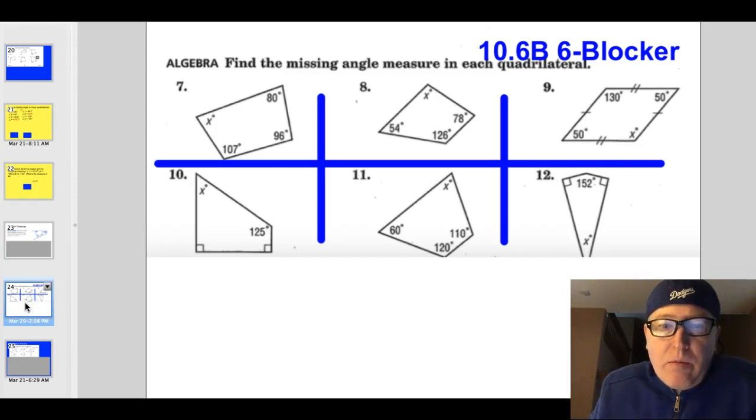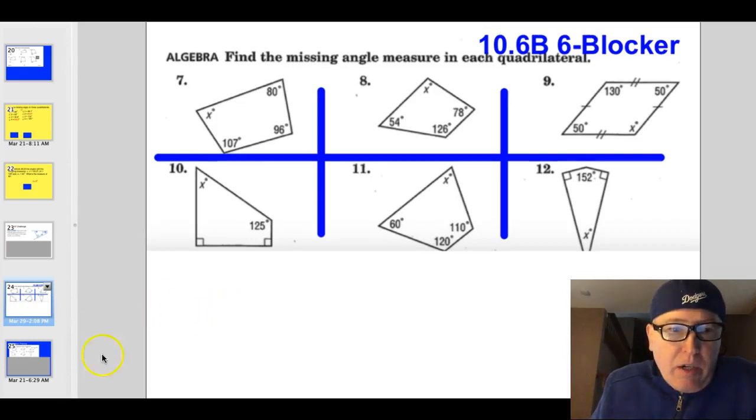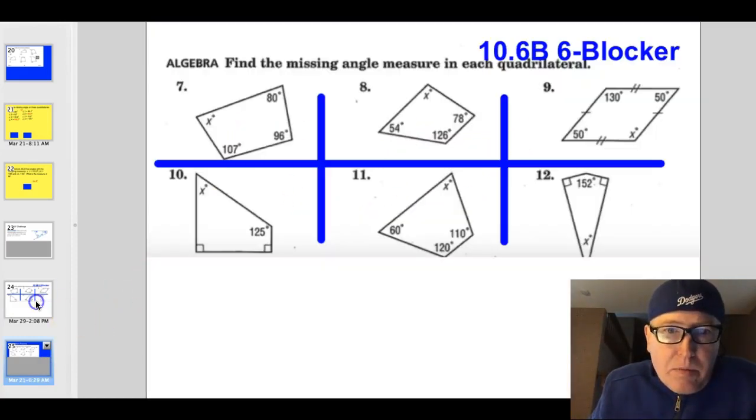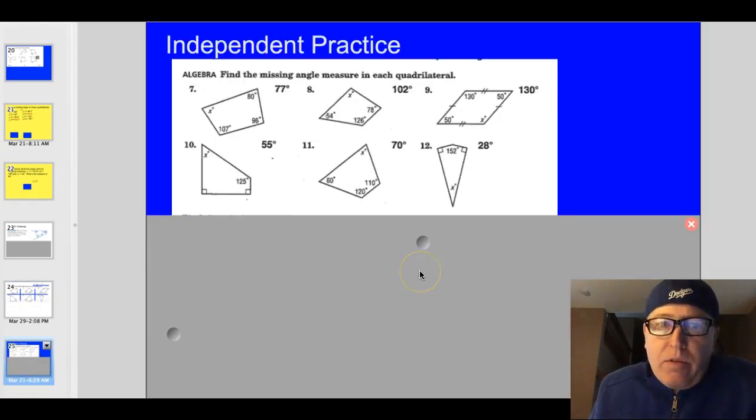Six blocker. This goes in the bottom right-hand corner of your page. All right. I'm going to start right here. If you do the six blocker, finding the missing angle for 7 through 12. Here are your angles. 77 degrees for 7. 102 here obtuse for 8. 130 degree obtuse angle here. This is a parallelogram. You don't even need to calculate it. The opposite angles will be equal. This one here, of course, is a 90, but the missing one up here is 55 degrees. 70 degrees here. And down here, 28 degrees.